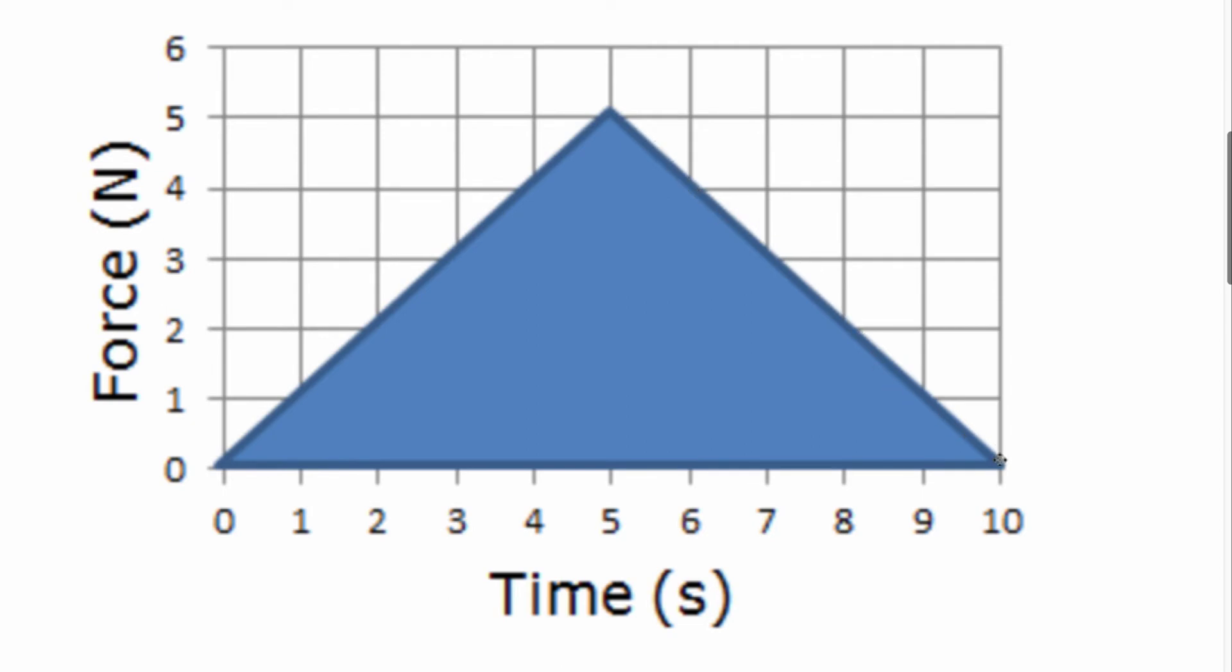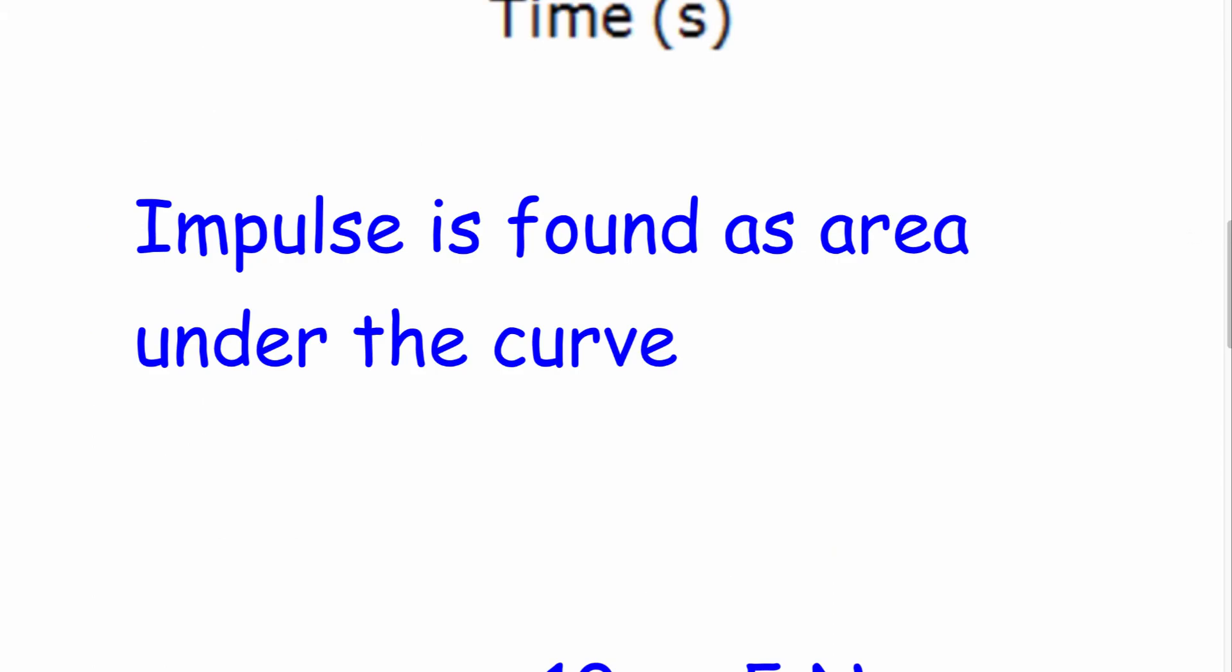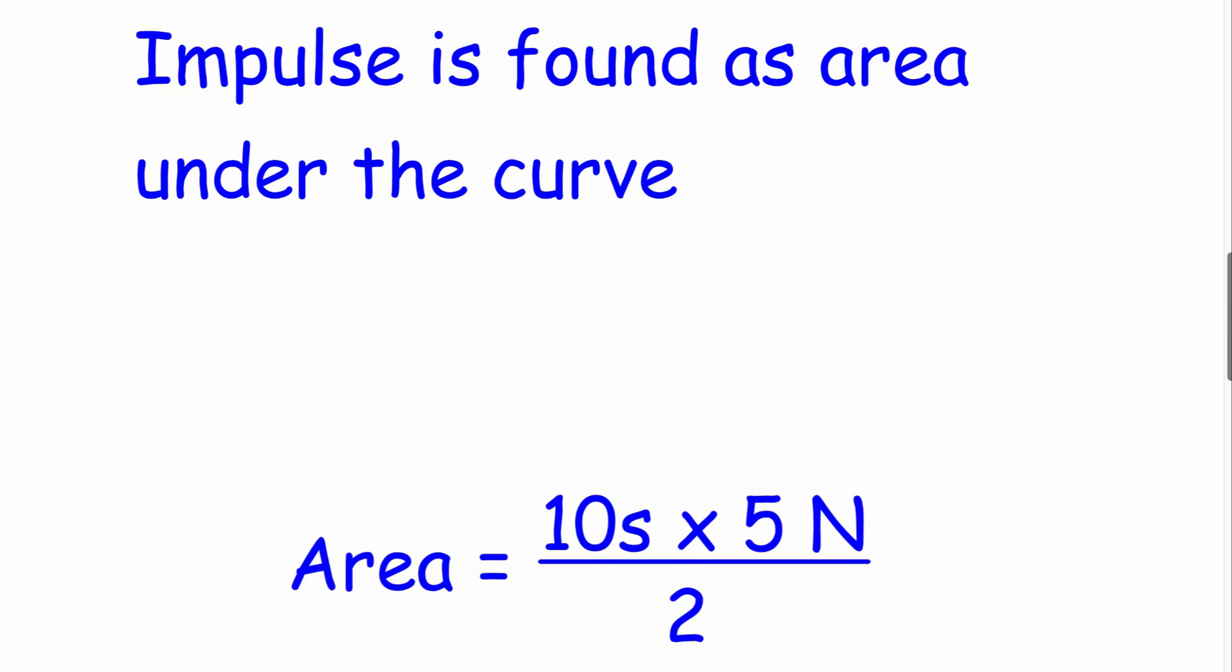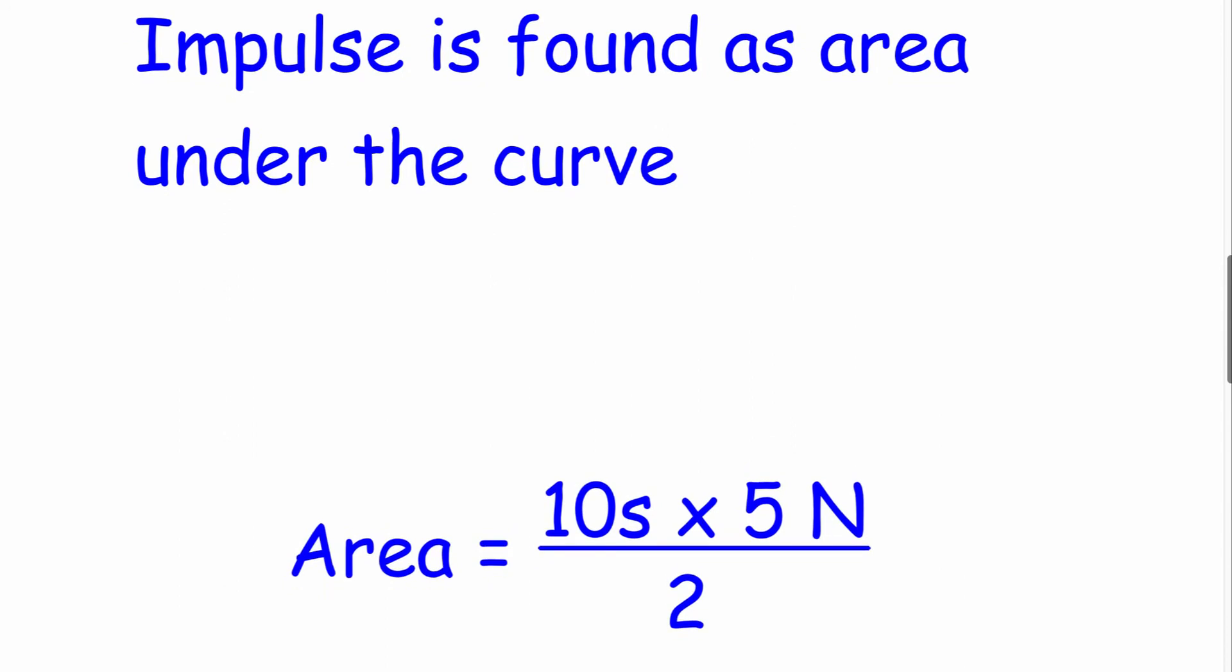Force comes back down again and it goes down to zero. So we find the area underneath the curve, which in this case is a triangle. Our area of a triangle is base times height divided by two.